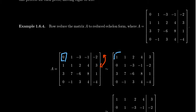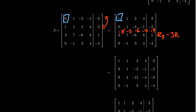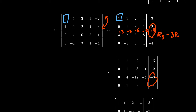Now looking at our pivot position, we want to zero out everything below it. There's only something non-zero in the third row. To get rid of the 3 in the third row, we replace row 3 with row 3 minus 3 times row 1. One times negative 3 is negative 3, those cancel. We get negative 6 in the next entry, negative 12 from 4 times negative 3, and negative 9 from 3 times negative 3. Combining: 3 minus 3 gives zero, 7 minus 3 gives 4, negative 6 minus 6 gives negative 12, 8 minus 12 gives negative 4, and 1 minus 9 gives negative 8.